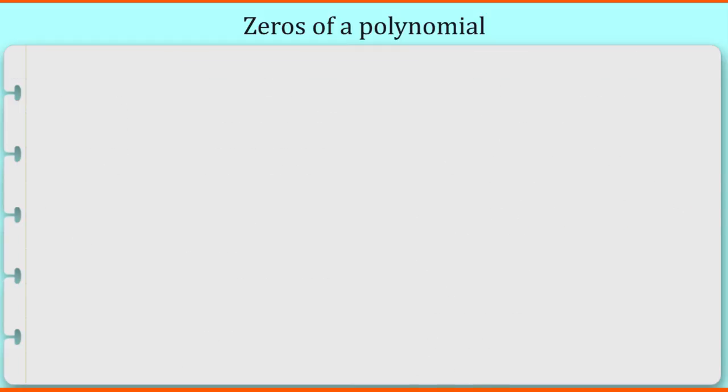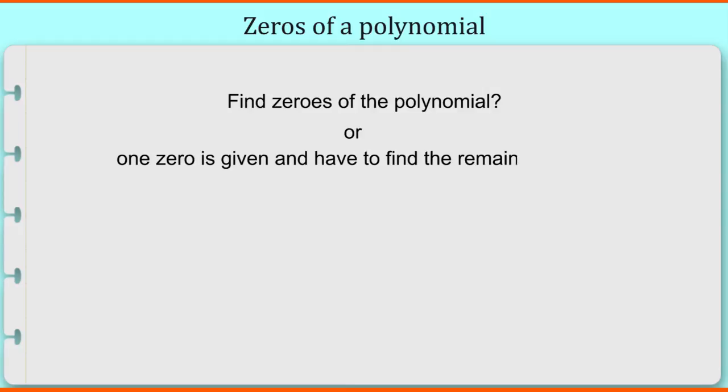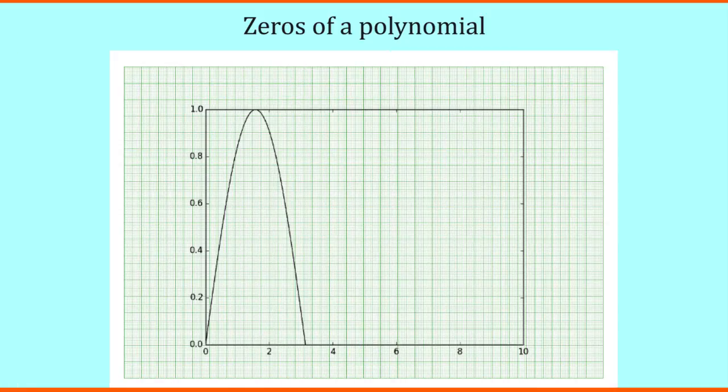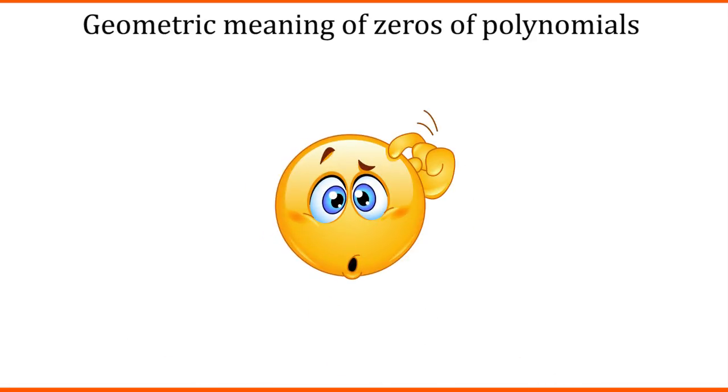Friends, there will be questions in the exams asking to find the zeros of polynomials, or we may have been given one zero already and have to find the remaining zeros. Now, as we have found the zero of polynomial algebraically, we can also find it geometrically with the help of a graph, which is also called geometric meaning of zeros of polynomials. Now, how can we find zeros of polynomials by drawing a graph?